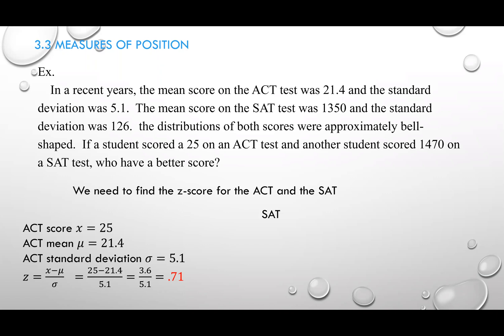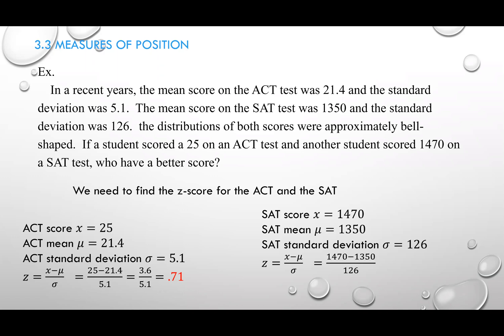Now to compare with the SAT: the SAT data is 1470, mu is 1350, and standard deviation is 126. Plugging in: 1470 minus 1350 divided by 126 gives 0.95. Comparing the two z-scores, we can see the SAT student performed better relative to their peers — 0.95 is bigger than 0.71. In terms of z-scores, we compare relatively, and since both distributions are normal, the SAT student's score is higher or better than the ACT student's score.